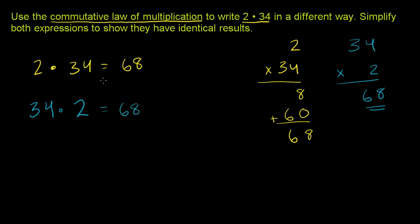So it doesn't matter whether you have two groups of 34 or 34 groups of 2. In either case, you're going to have 68.